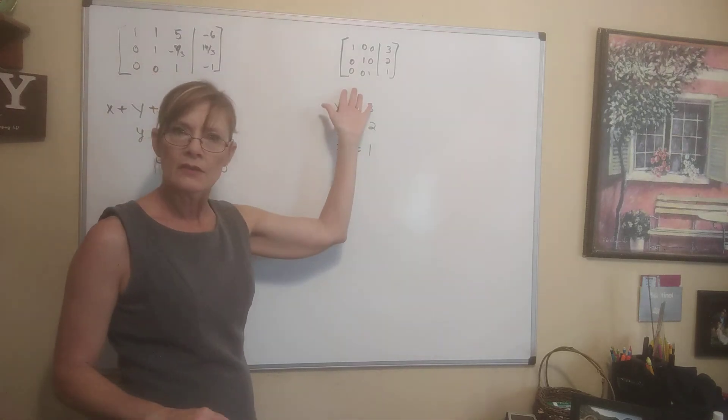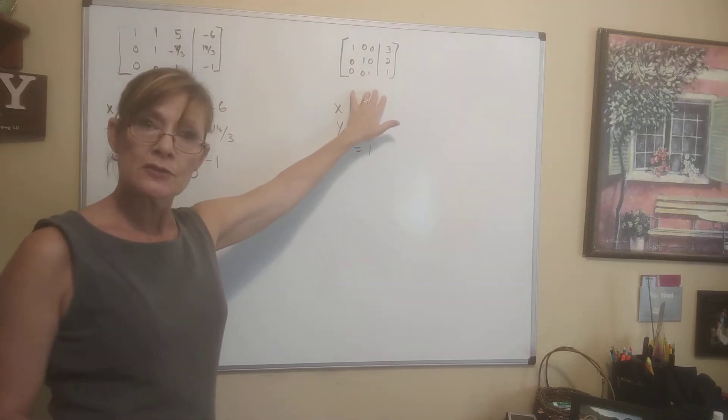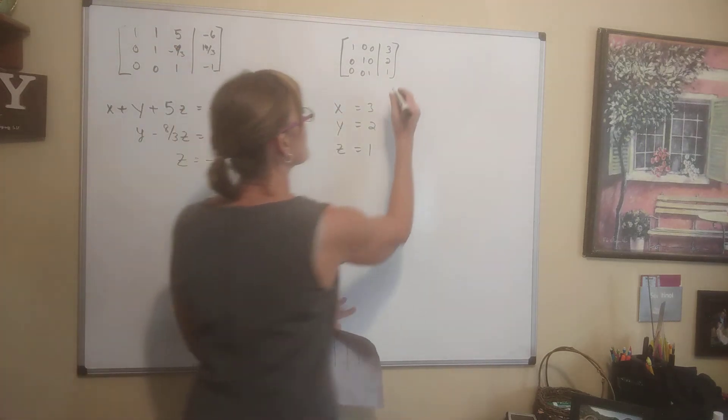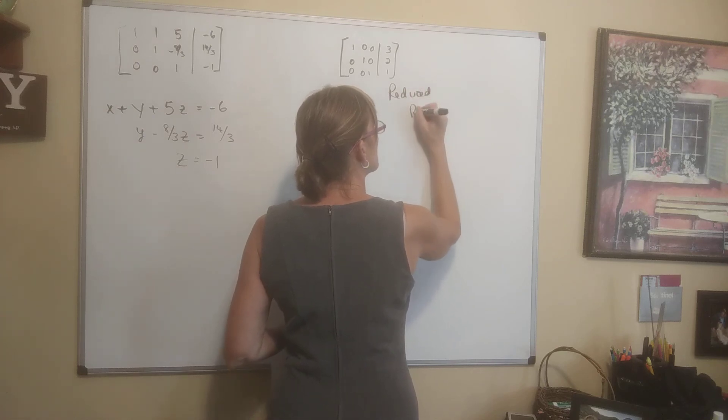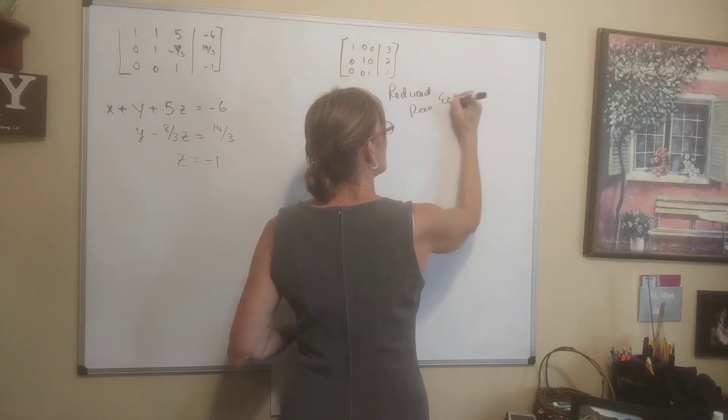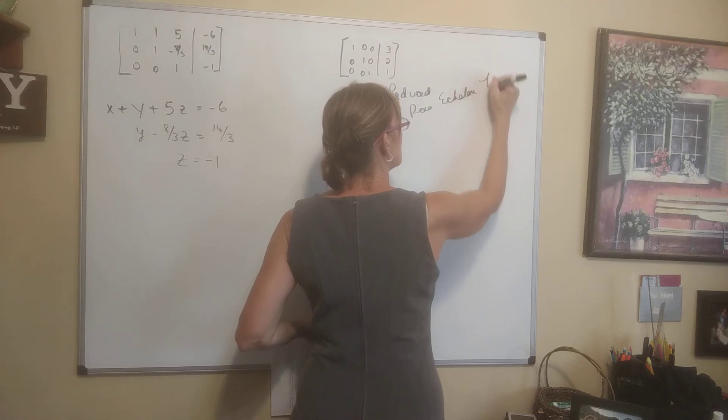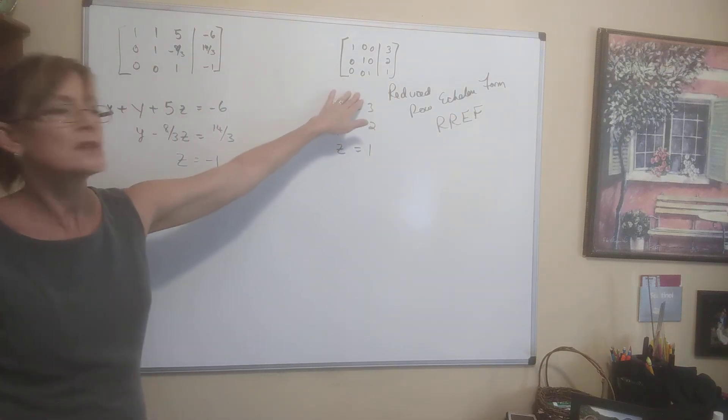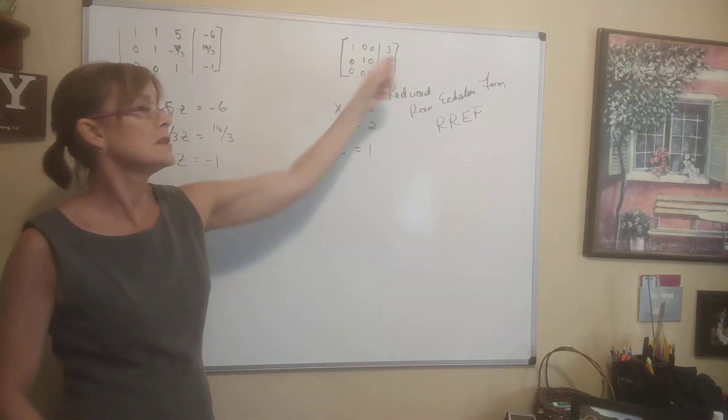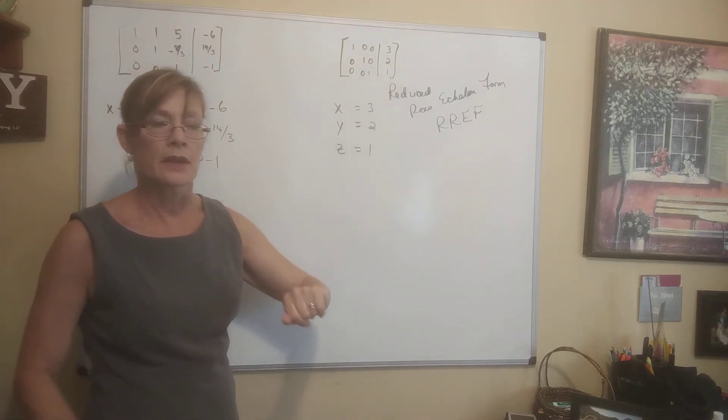If we could only get a matrix in this form. This is a very special form. This is called reduced row echelon form or RREF. If we can get our matrix in this form, our solutions are there. X is 3, Y is 2, Z is 1. Just like that.